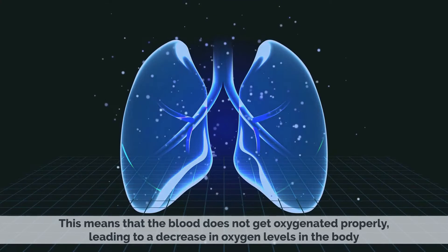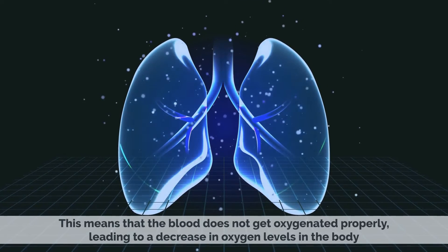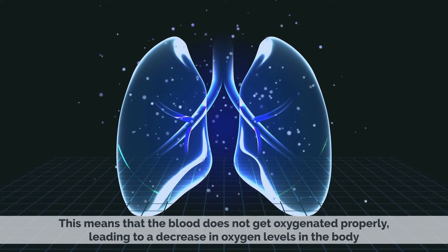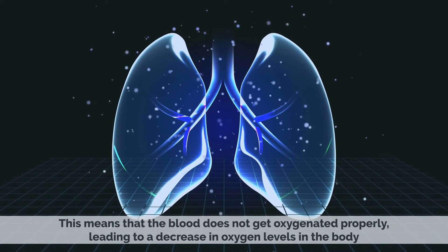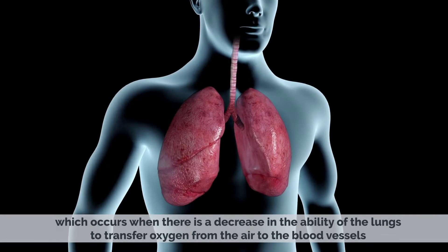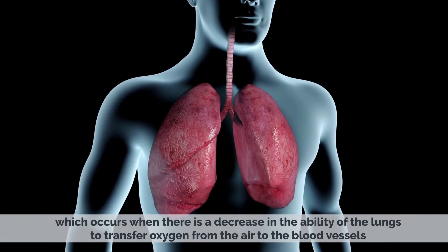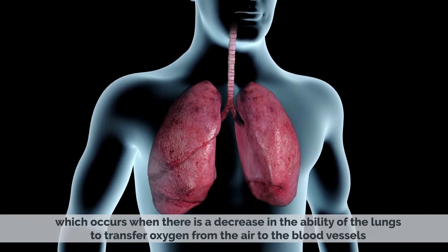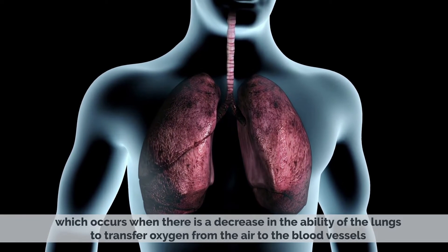With shunt hypoxemia, the blood does not get oxygenated properly, leading to a decrease in oxygen levels in the body. Diffusion impairment hypoxemia occurs when there is a decrease in the ability of the lungs to transfer oxygen from the air to the blood vessels.